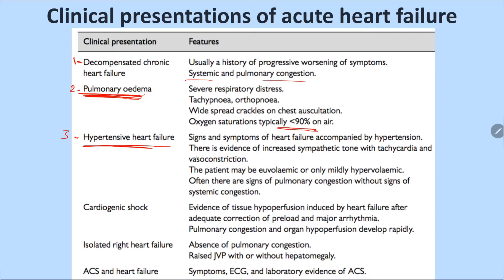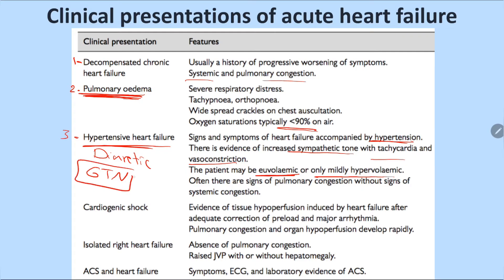The third category is hypertensive heart failure. Here there is not much fluid overload; the patient is euvolemic or only mildly hypervolemic. The problem is increased sympathetic tone causing systemic vasoconstriction, tachycardia, and very high blood pressure — often exceeding 200 systolic. There is little pulmonary congestion, but these patients usually respond well to vasodilators such as glyceryl trinitrate (GTN) in addition to diuretics.